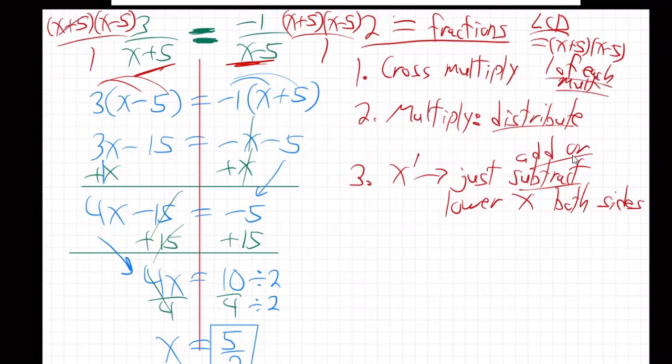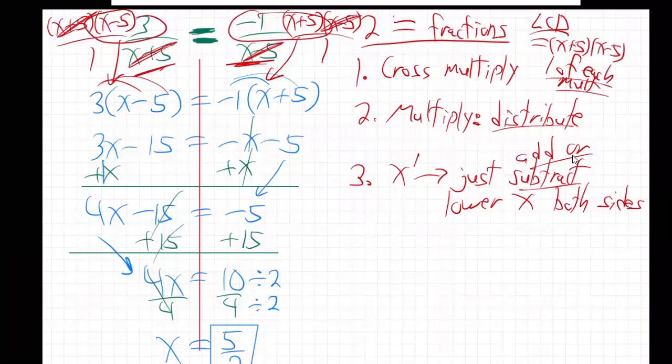Look with me. X plus fives will cancel. X minus fives will cancel. What's left here? Three times x minus five. Isn't that exactly what we got by cross multiplying? Negative one times x plus five. Isn't that exactly what we got by cross multiplying?